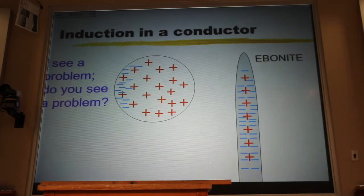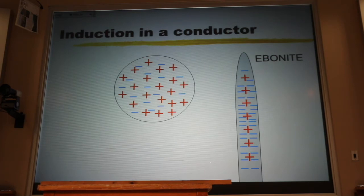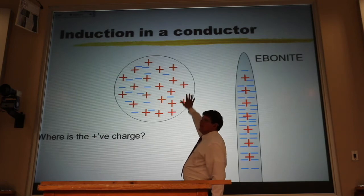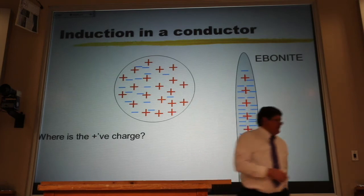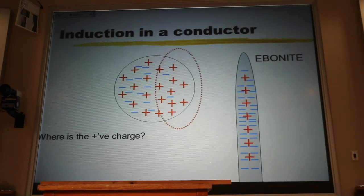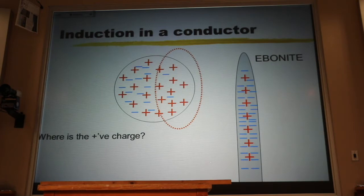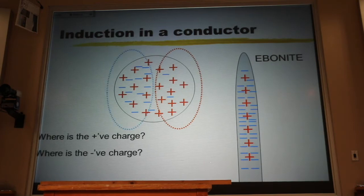So what really happens is it starts out with a uniform distribution. I bring that rubber rod in and the electrons just take a little baby step away. Not a huge step, just a little baby step. But what that does is it leaves a region of the can without any electrons, or more naked protons than protons that have electrons. It also leaves part of that can more negative than positive.